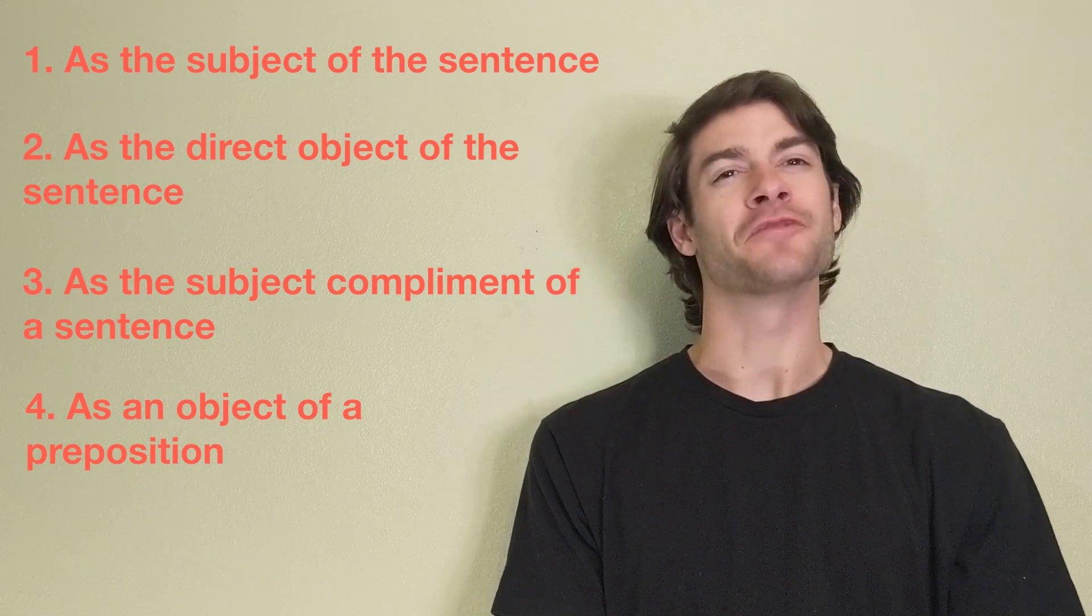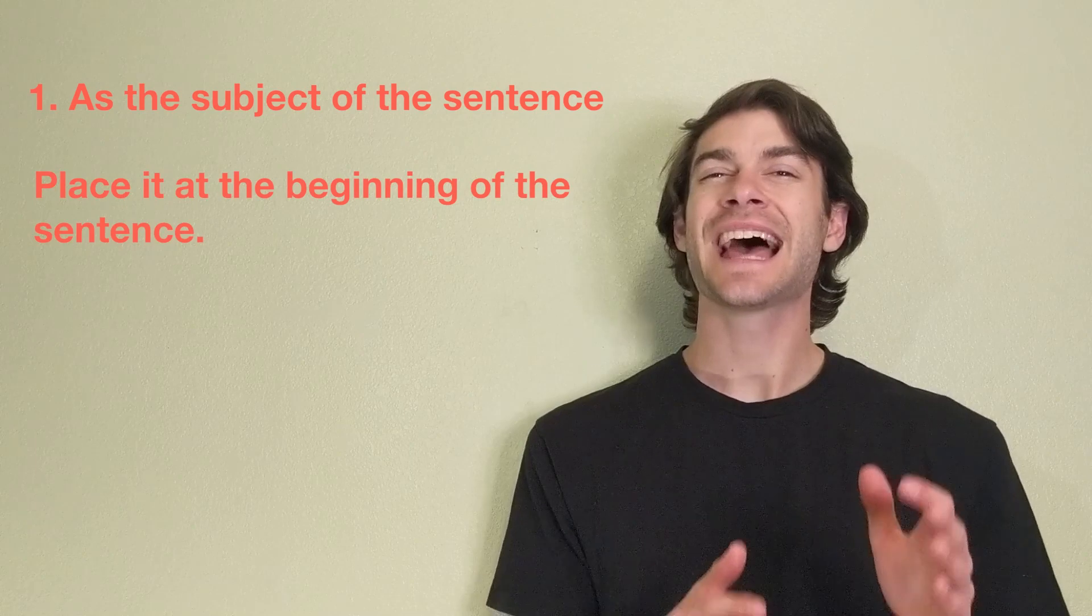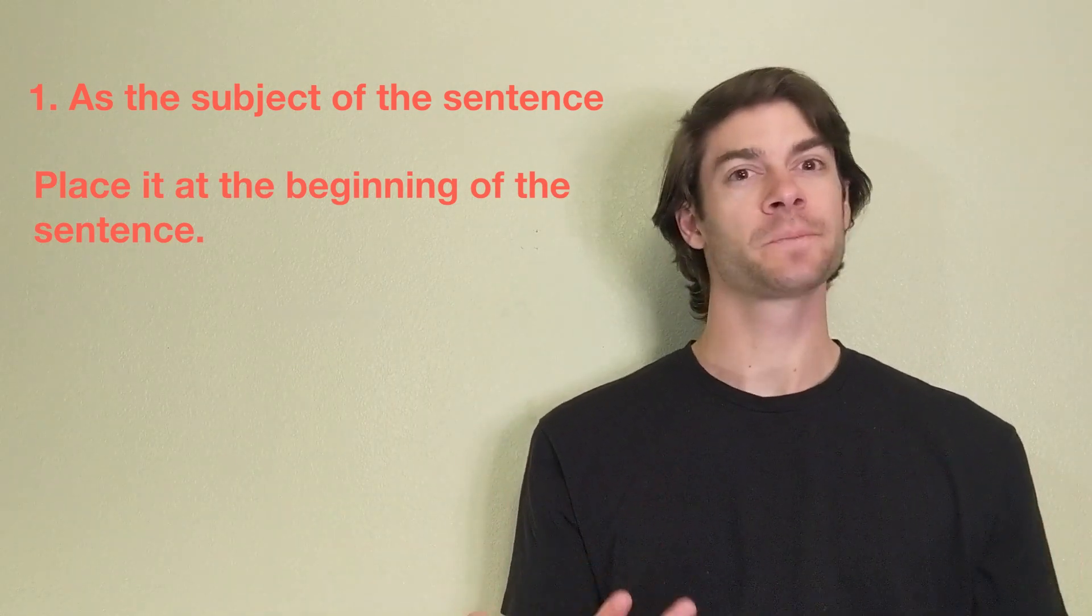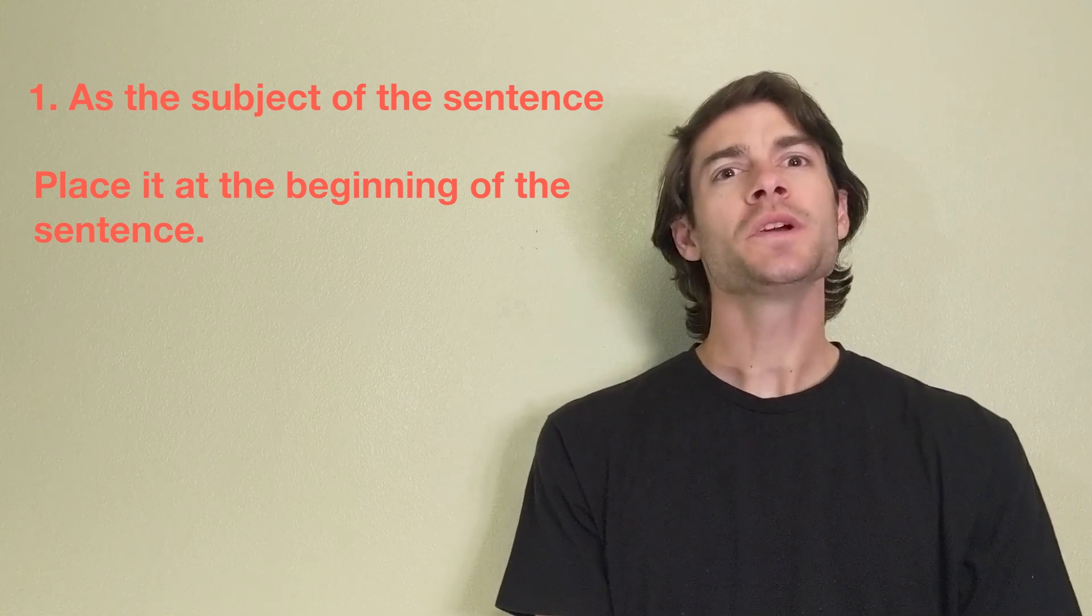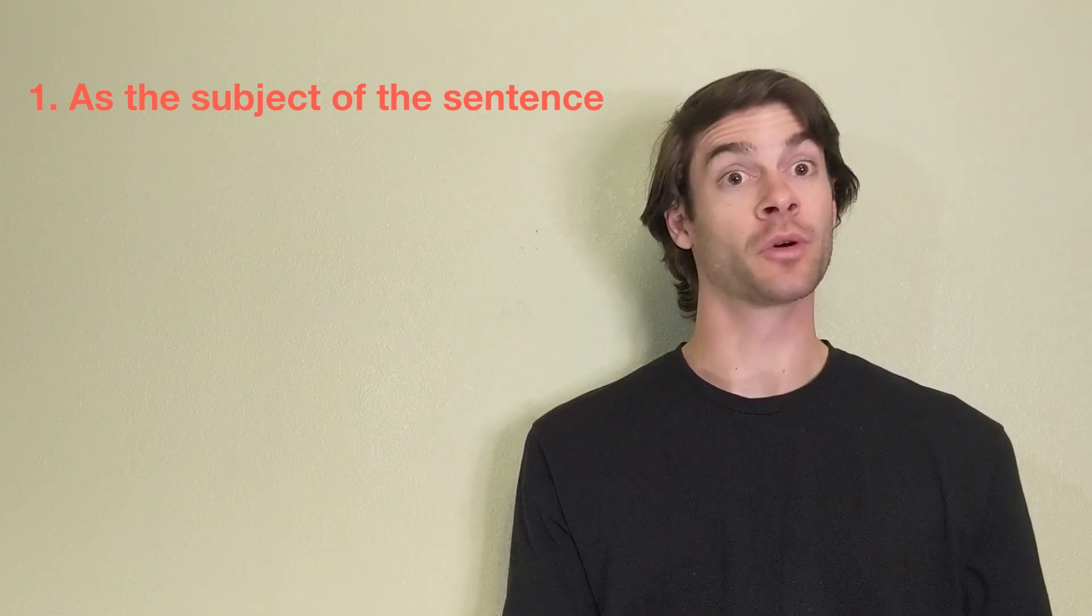Let's look at a few examples of these uses. First, when we use a gerund as the subject of the sentence, we place it at the beginning of the sentence. Let's say, for example, we want to tell someone about the benefits of going for a run.